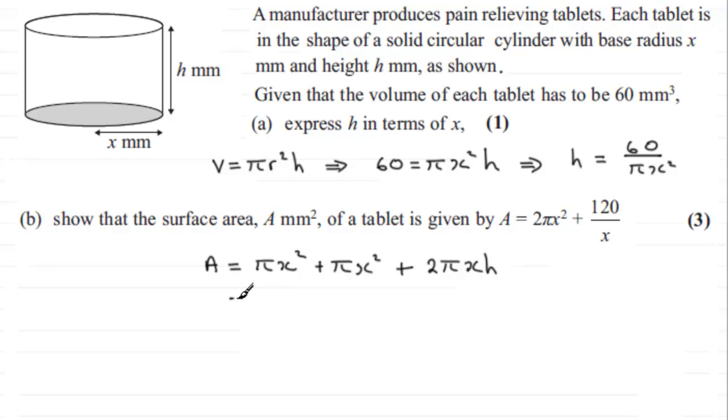Okay, so what we've got here then is our 2πx², and then plus 2πx, and now we can substitute for the h. H then is 60 over πx².